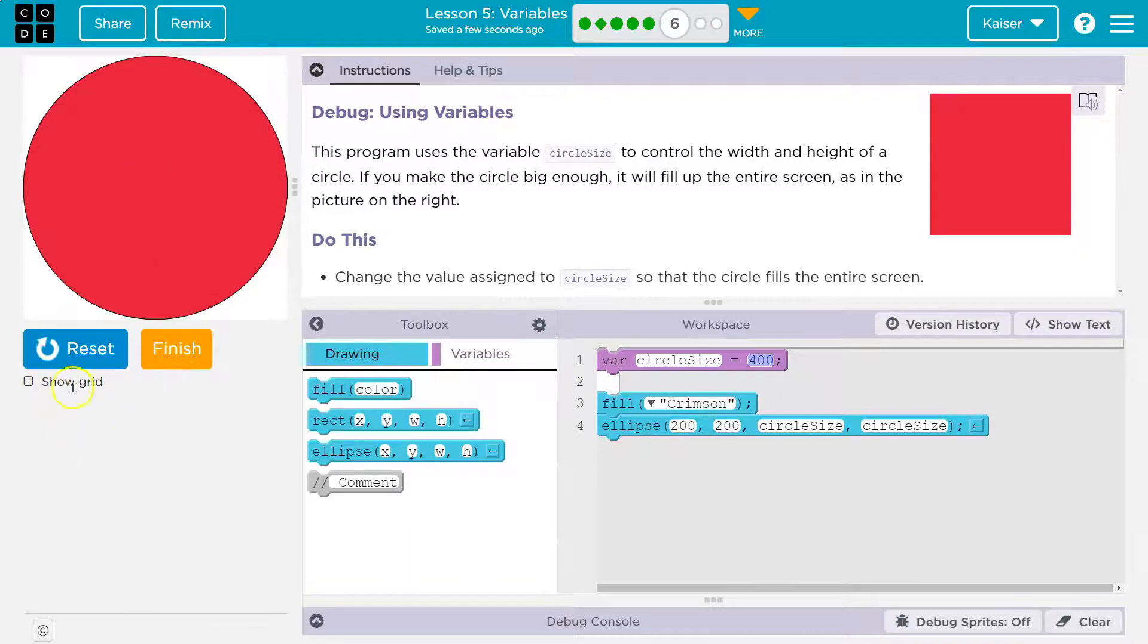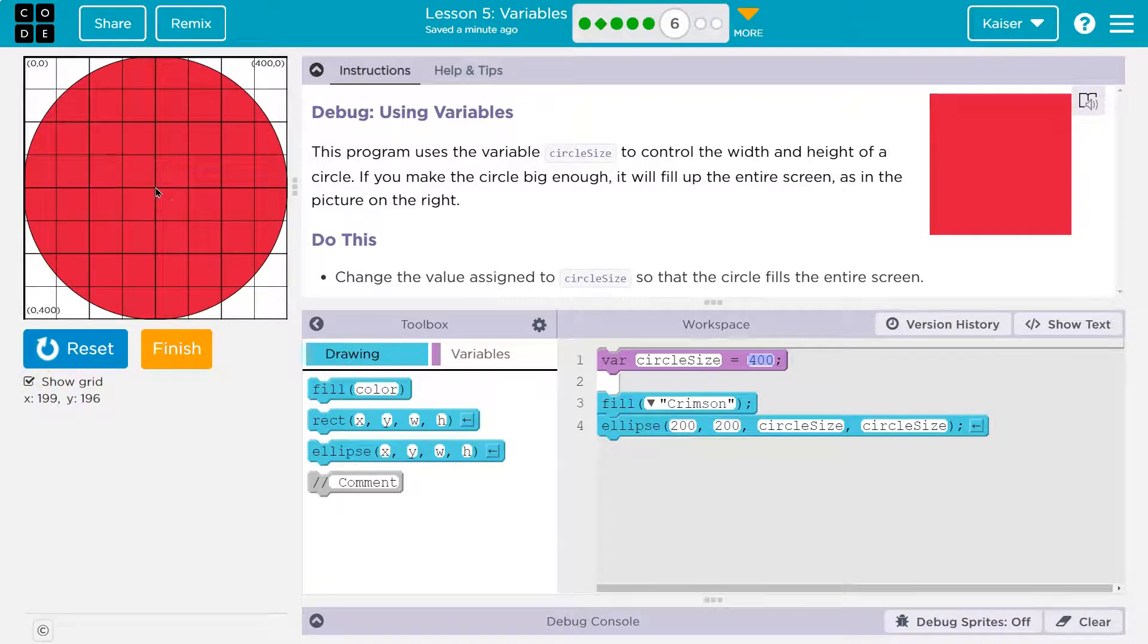If I hover the mouse over, it shows me way down here. I could also do show grid. And you can see, yep, that's where it is centered.